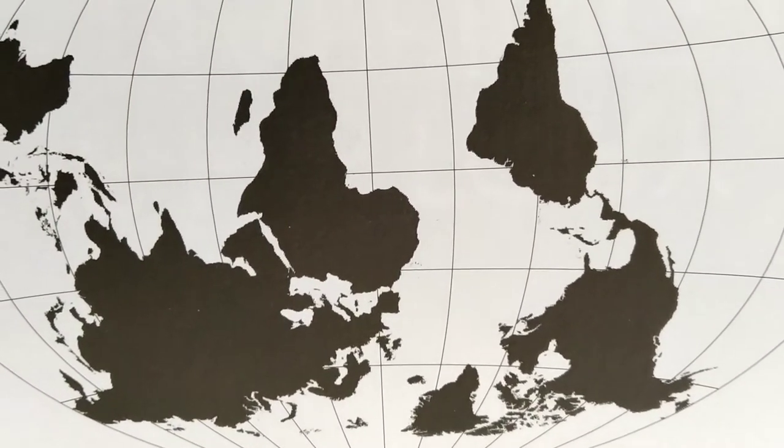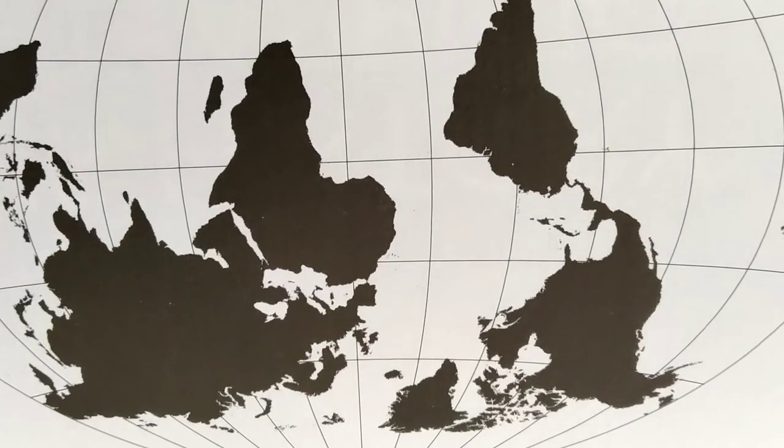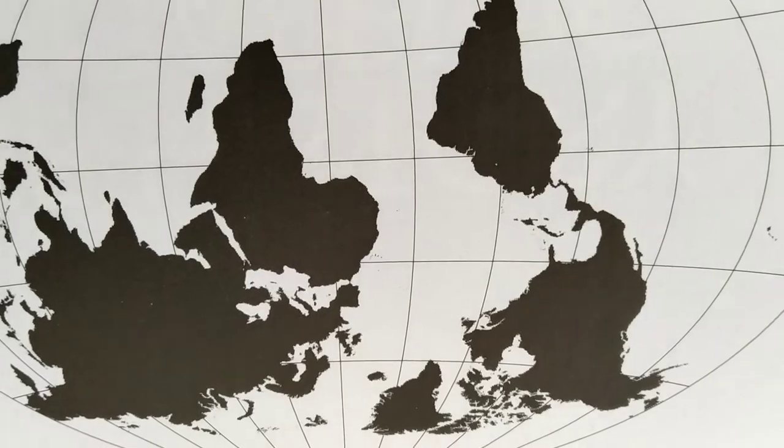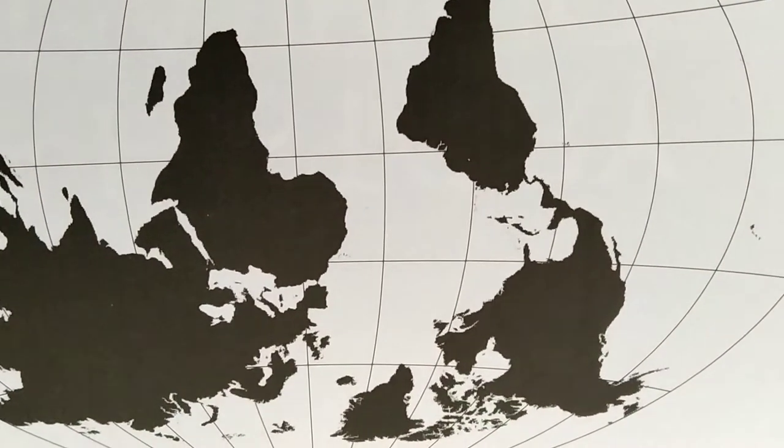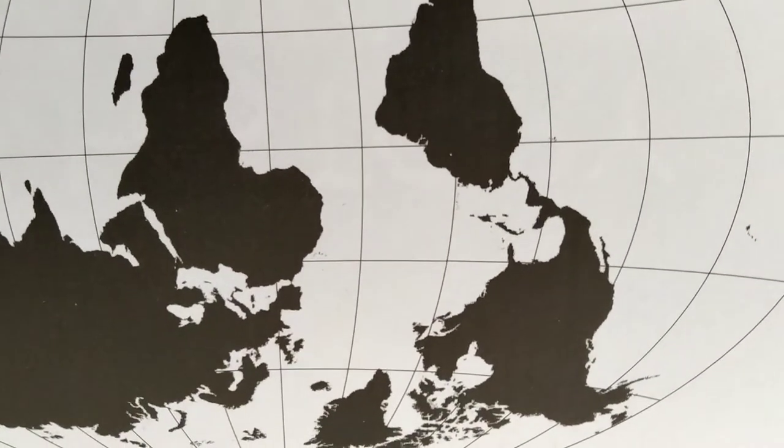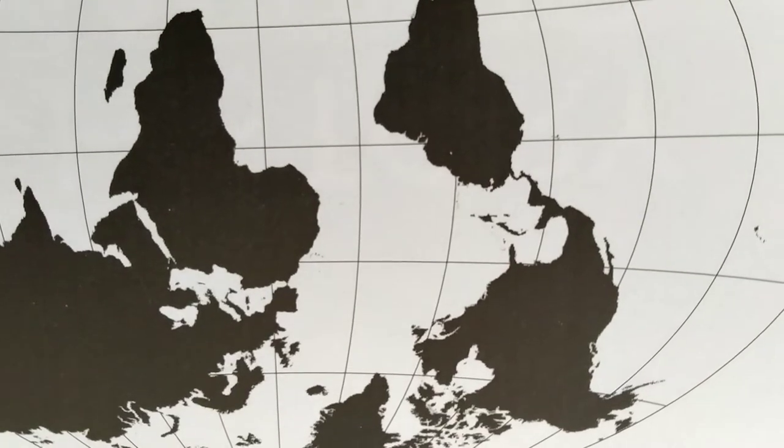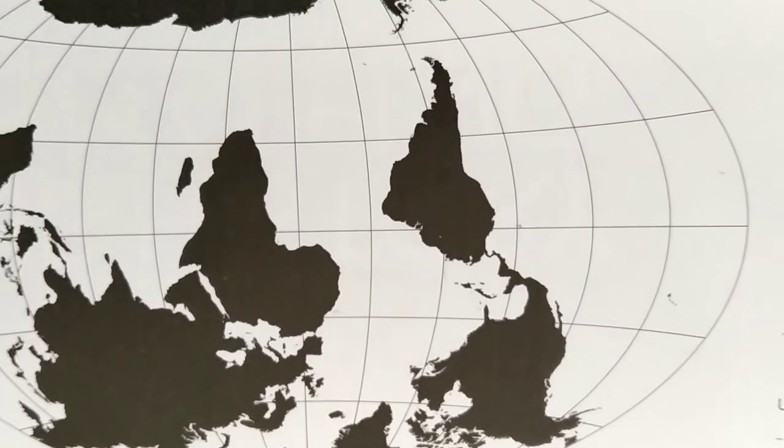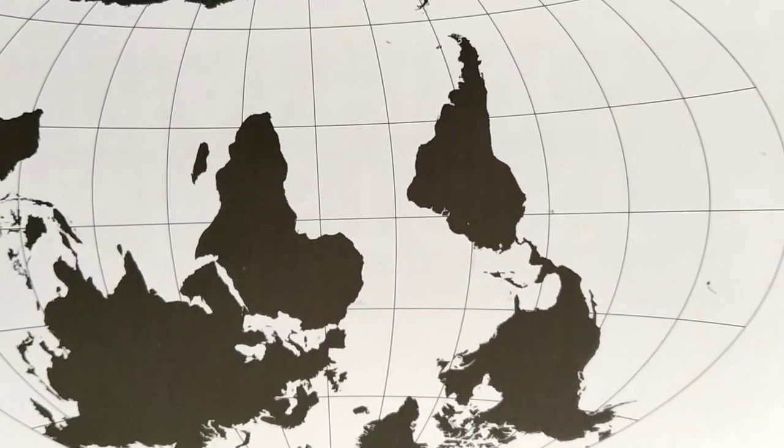The Robinson projection was used in classrooms and textbooks from 1988 to 1998. The Winkel Tripel projection was used by the National Geographic Society for most of its political maps from 1922 into the 1980s.